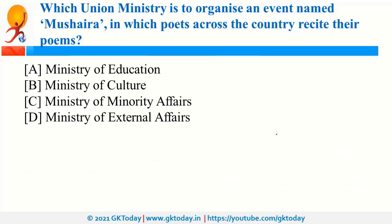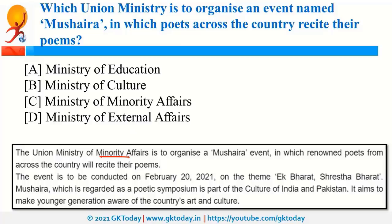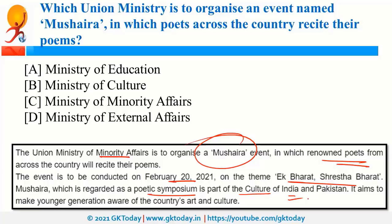The Ministry of Minority Affairs is organising an event named Mushaira, a poetic symposium which is part of the cultural traditions of India and Pakistan. The event was conducted on 20th February with the theme 'Ek Bharat Shrestha Bharat.' The Ministry was also in news for the Nai Roshni scheme, which aims at developing leadership among minority women.